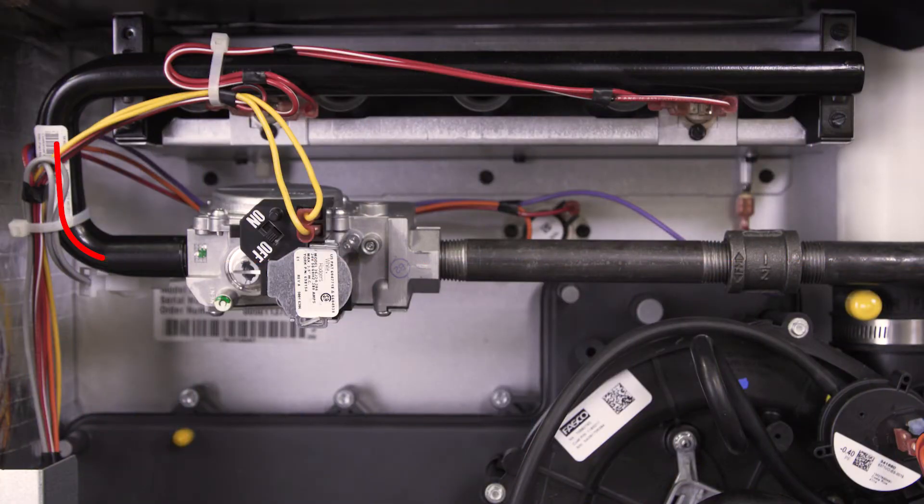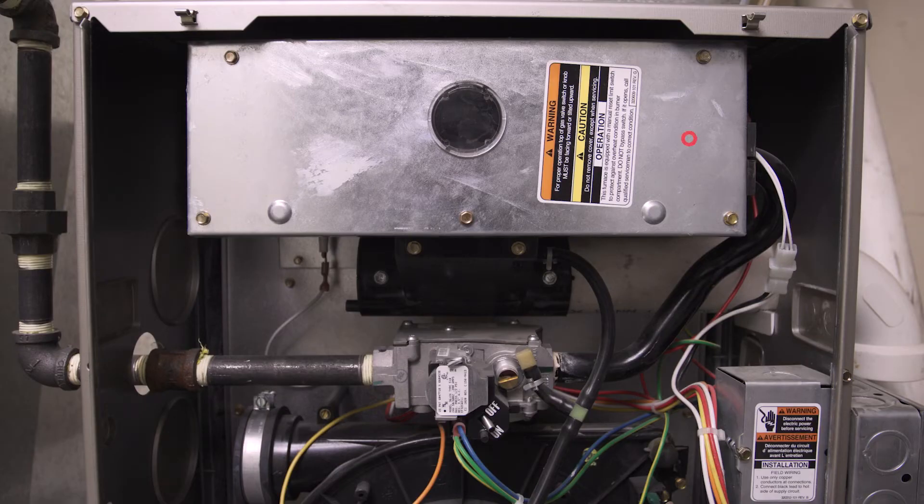Trace the gas line up to the burner. The igniter should be on this side. In some furnaces, it'll be hidden behind a cover.